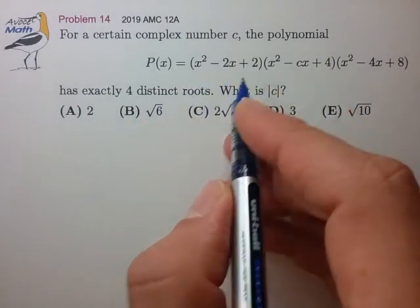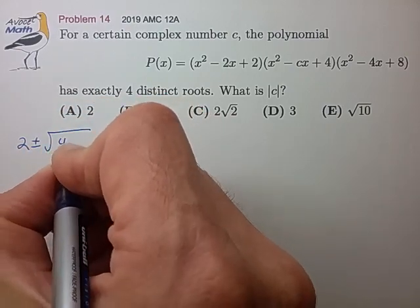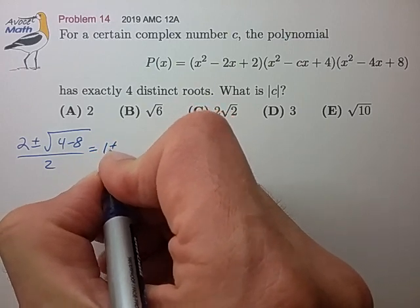So for the first one here we'll have the roots being 2 plus or minus the square root of 4 minus 8 over 2. That's 1 plus or minus i.